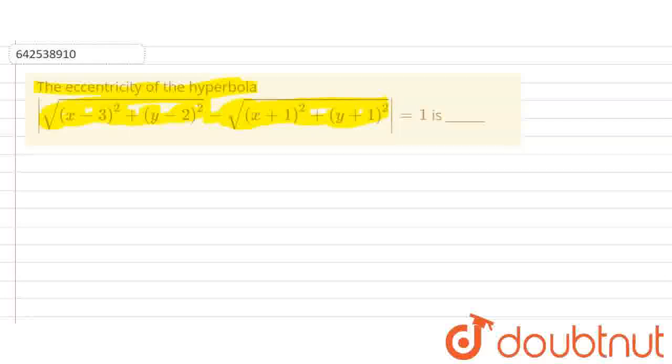We know one important property of a hyperbola: |SP - S'P| equals the transverse axis, which equals 2a. Here S and S' are the foci of the hyperbola, and P is any point on the hyperbola.